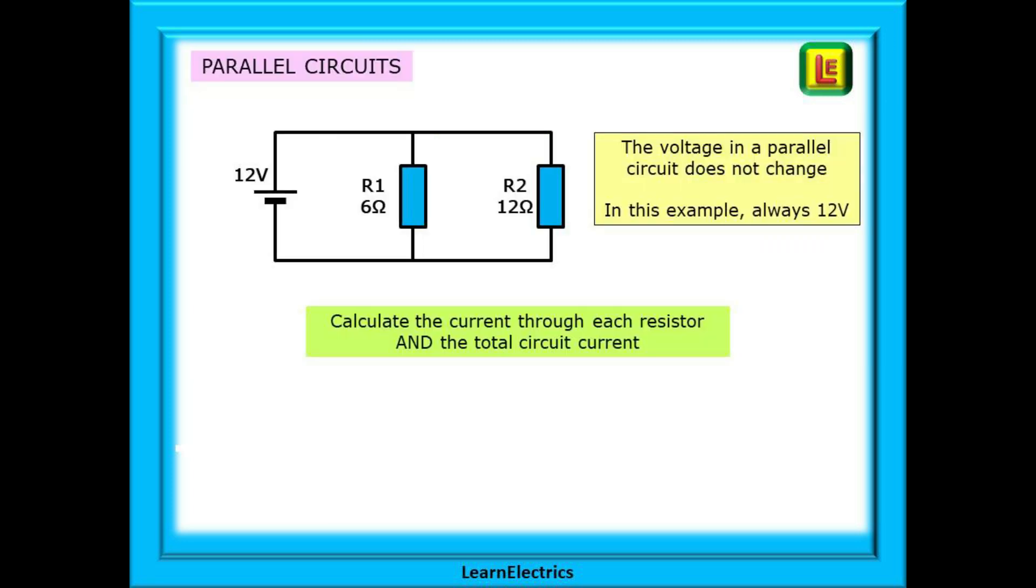Parallel circuits are very common in electronics. By pairing different components in parallel, we can make things happen. The voltage across a parallel circuit does not change. In the example shown, the voltage across the two resistors is always 12 volts, but we will have individual currents through each resistor, and this will affect the total current in the circuit.